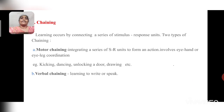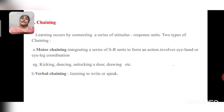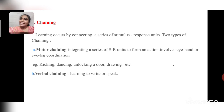The next level is chaining — learning occurs by connecting a series of stimulus-response units. There are two types: motor chaining involves integrating a series of stimulus-response units to form an action, involving eye-hand or eye-leg coordination. Examples include kicking, dancing, playing, and even drawing in a classroom where the child executes several steps.